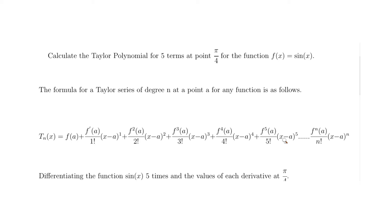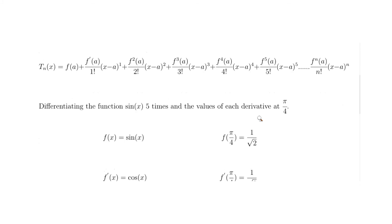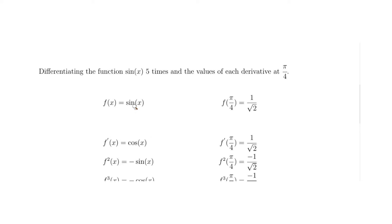The next stage is to draw up a table where we calculate the value of sine of x at π/4 and differentiate sine of x five times, evaluating each derivative at π/4. The function is sine of x, and its value at π/4 is 1/√2 — you could also write this as √2/2, but 1/√2 will have advantages later. The derivative of sine is cosine, and cosine of π/4 is also 1/√2.